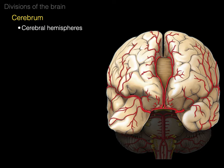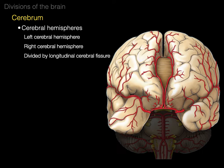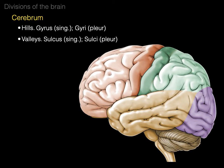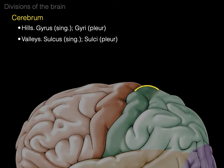In this anterior view, we see that the cerebrum has two cerebral hemispheres — a left and a right — divided by the longitudinal cerebral fissure, with the corpus callosum at the bottom. The cerebrum consists of hills and valleys. The hills are called a gyrus (or gyri, plural) and the valleys are called a sulcus (or sulci, plural). This increases the surface area for more neurons in the brain.